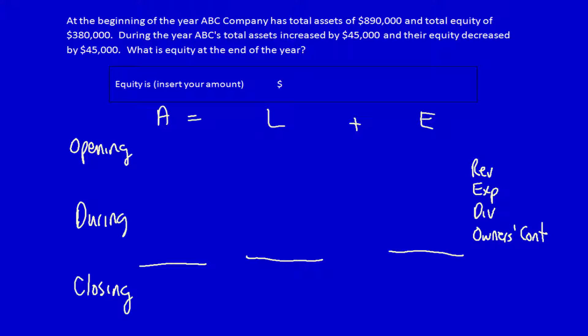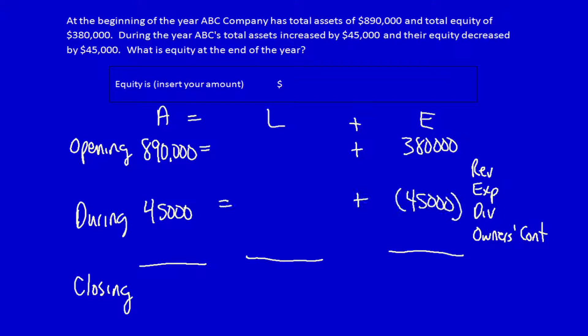At the beginning of the year, ABC Company has total assets of 890,000 and total equity of 380,000. During the year, ABC's total assets increased by 45,000 and their equity decreased by 45,000. What is liabilities at the end of the year?